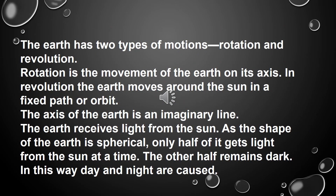The earth has two types of motions: rotation and revolution. Rotation is the movement of the earth on its axis. In revolution, the earth moves around the sun in a fixed path or orbit.